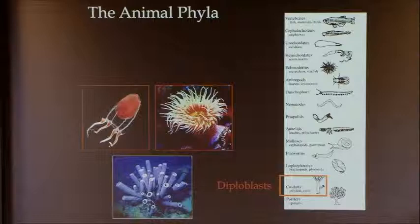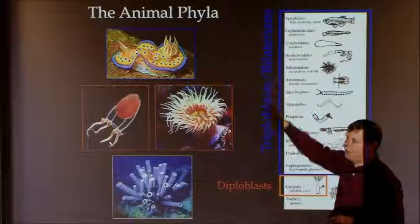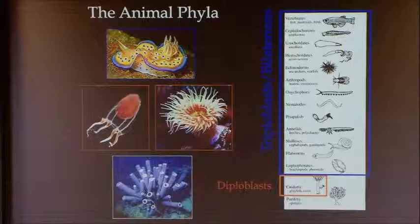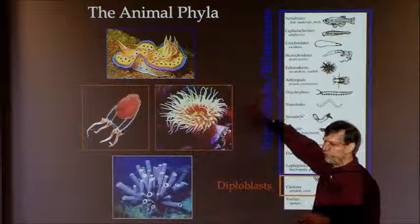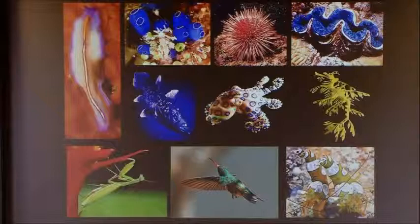All of the other phyla are called triploblasts — they have three primary cell layers. The inside ectoderm makes the gut, the outside ectoderm makes the outside, and the mesoderm makes things like heart, bone, and a lot of the tissues. They're often called bilaterians because they tend to be bilaterally symmetrical. The Cambrian explosion is largely about the sudden appearance of the triploblastic phyla at the base of the Cambrian.